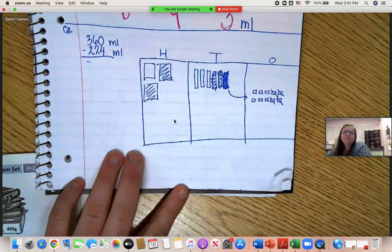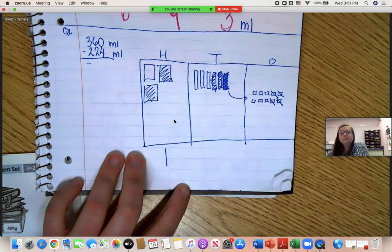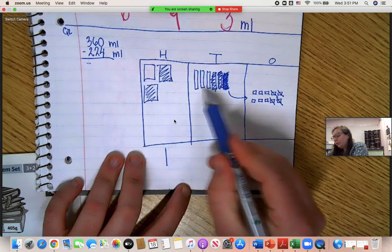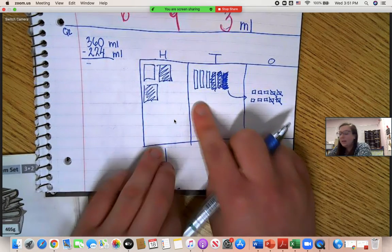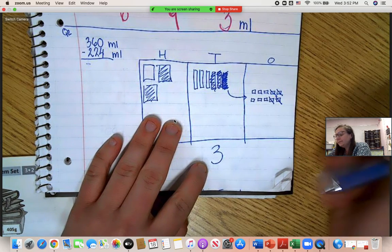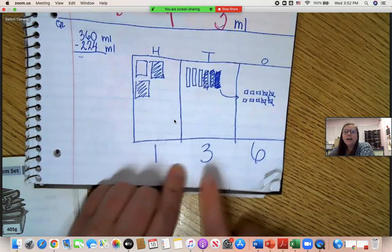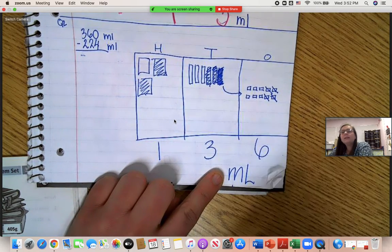All right. How many hundreds do we have left? One hundred. How many tens do we have left? One, two, three hundred. I mean, three tens or thirty. And how many ones? One, two, three, four, five, six. Six. One hundred thirty-six milliliters.